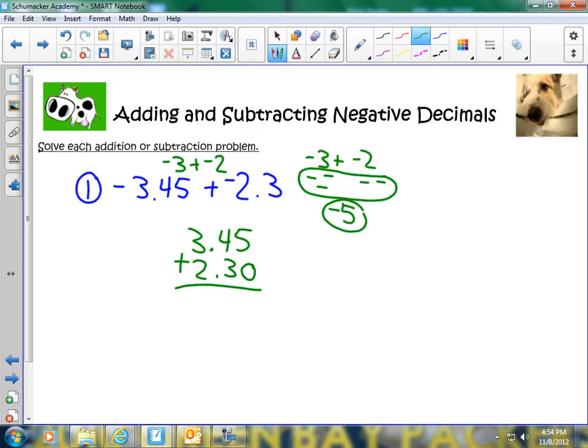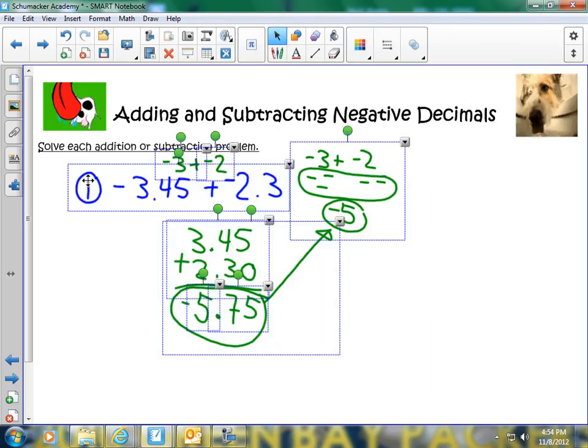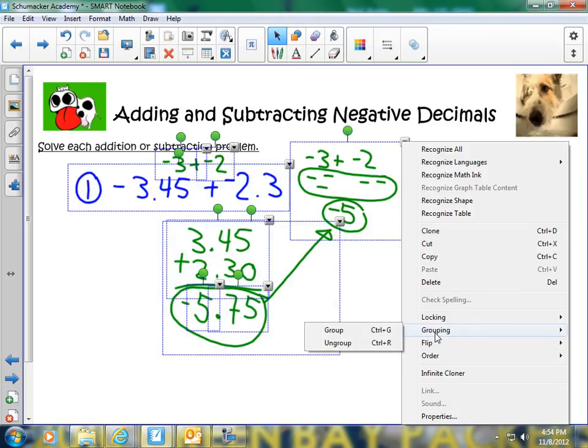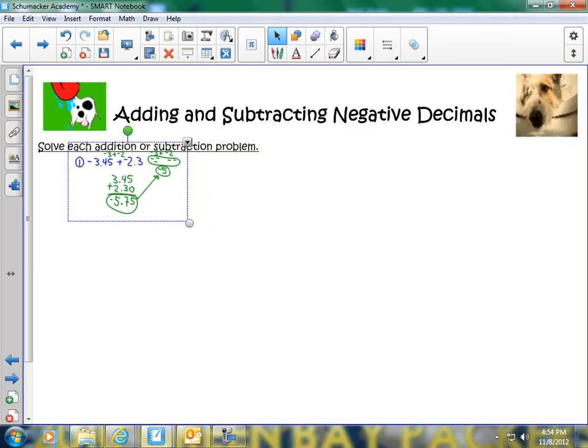That's all I have to do here. So I'm going to go ahead and add 5 plus 0 and get 5. 4 plus 3 and get 7, bring down my decimal. 2 plus 3 or 3 plus 2 is 5. And since I have negatives I'm dealing with, it's going to be negative 5 and 75 hundredths, which is just very close to our estimate. That's all you have to do. So when you're dealing with two negatives or two positives and you're adding, very, very simple.